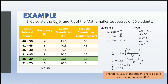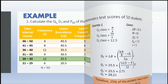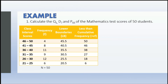Next is Decile 7. First we need to identify the D7 class using the formula kn/10, where k = 7 and n = 50. So 7 × 50 = 350, and 350 / 10 = 35. We need to find the class interval where the 35th score is contained.